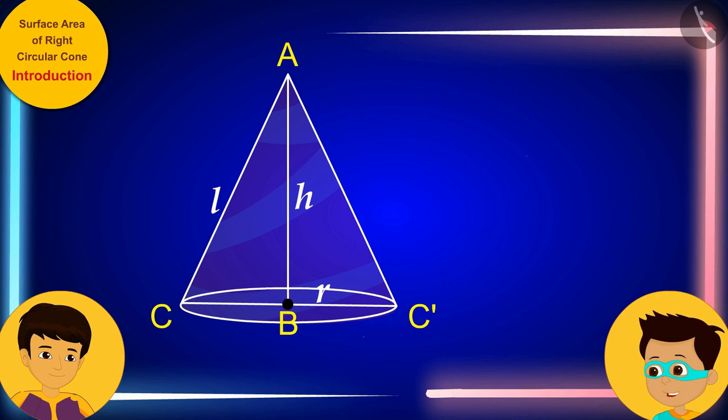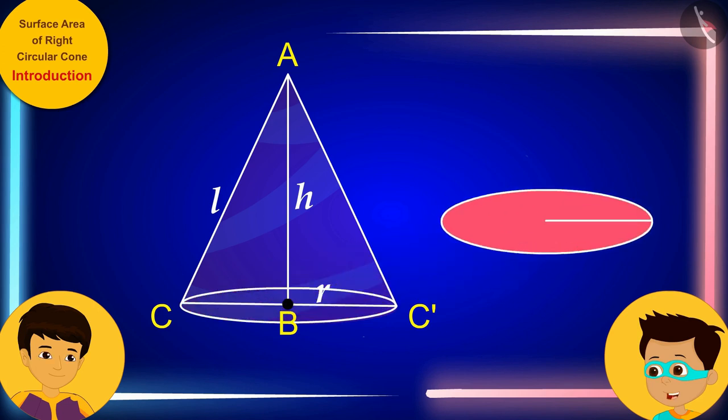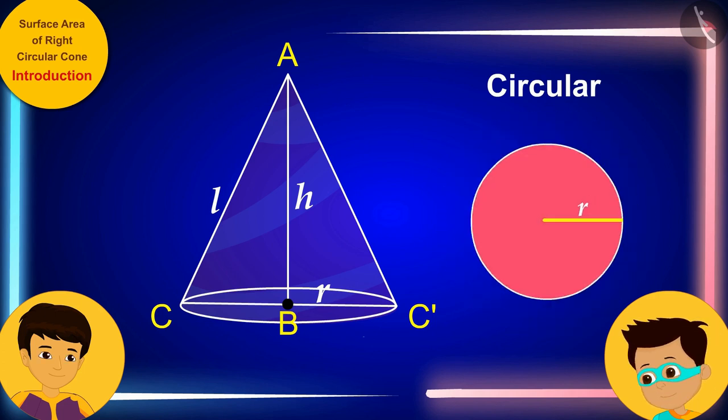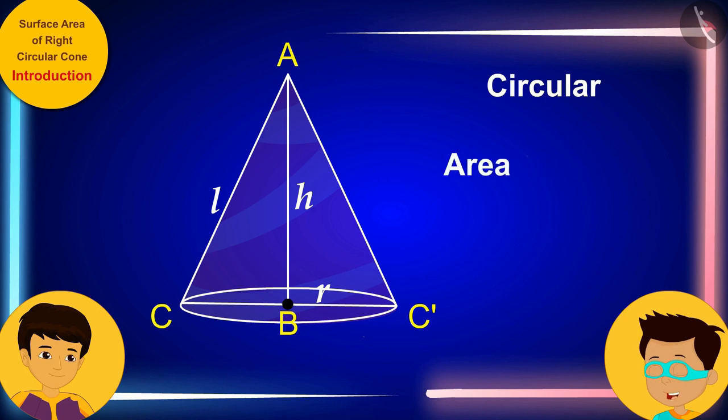And do you know, Manas, if the base of the cone is supposed to be kept closed, we will need a circular piece of paper with radius r to cover the base. The area of this circular piece of paper will be πr².